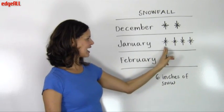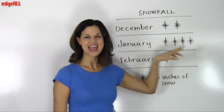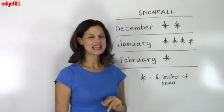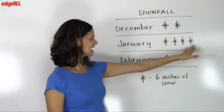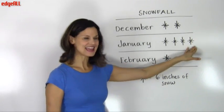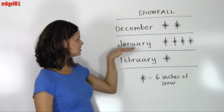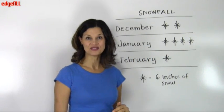In January, we have one, two, three, four snowflakes. And each snowflake equals six inches of snow. And so six times four is twenty-four. And we can see from our pictograph of snowfall, that in January, twenty-four inches of snow fell.